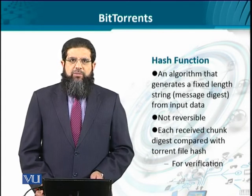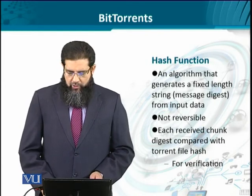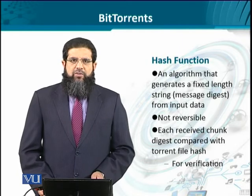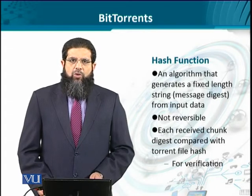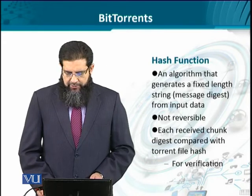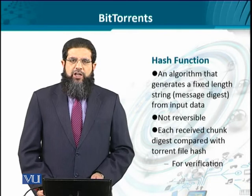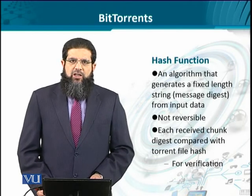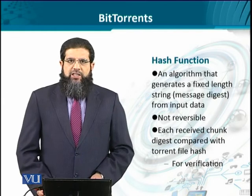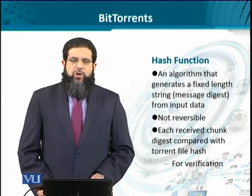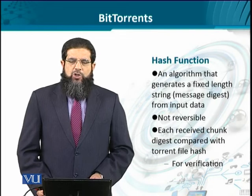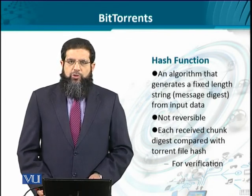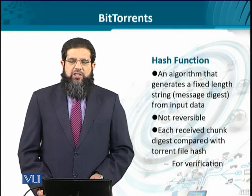The verification mechanism is based on a hash function, which is a simple algorithm that takes as input the name of the file, the size of the file, and the user who is holding the file. From these input parameters, a certain hash function value is created. This hash function is unique to the input parameters and is not reversible. When a peer downloads a chunk, it compares the hash function output — called the message digest — that it receives with the chunk, to the digest available in the torrent file. Through this mechanism, it is verified whether the chunk is original and part of the same file.